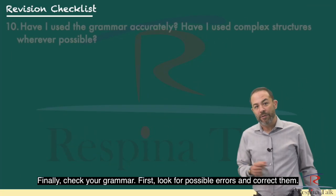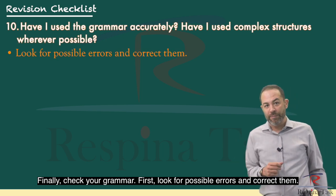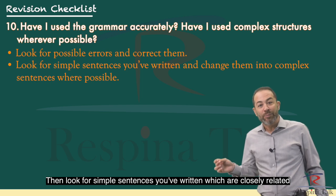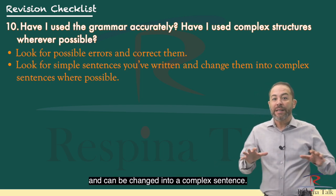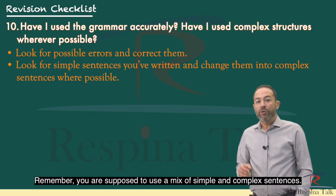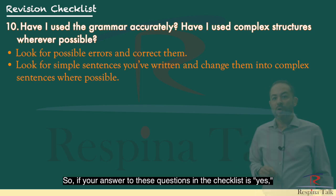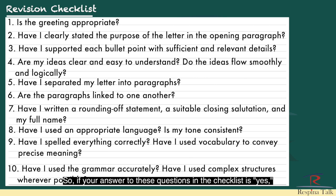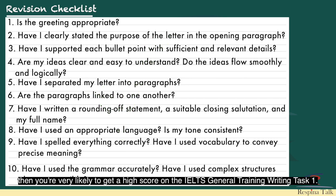Finally, check your grammar. Look for possible errors and correct them, then look for simple sentences that are closely related and can be combined into a complex sentence. Remember you're supposed to use a mix of simple and complex sentences. If your answer to all these checklist questions is yes, you're very likely to get a high score on IELTS General Training Writing Task 1.